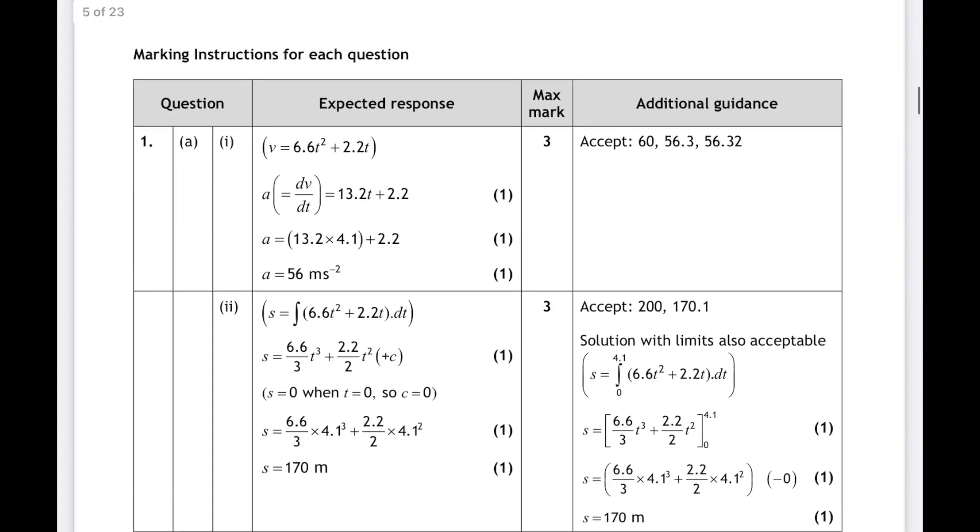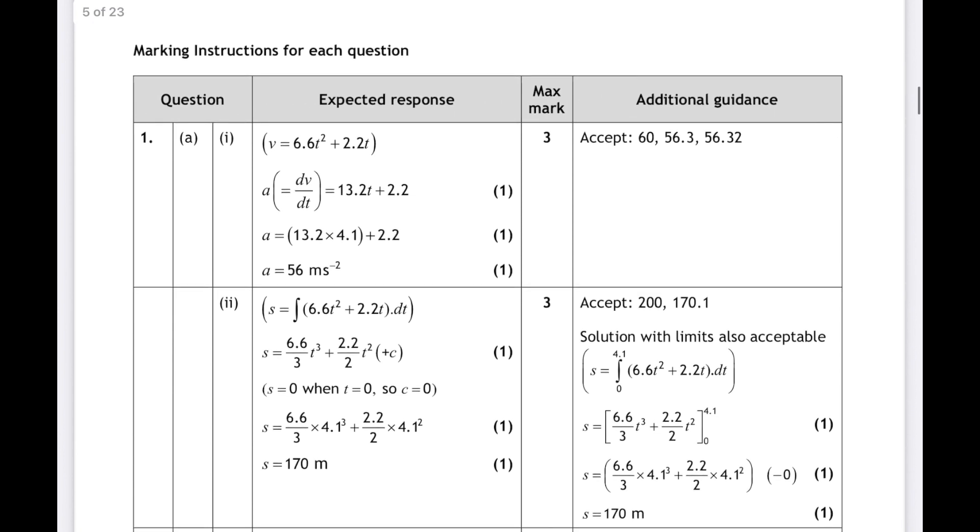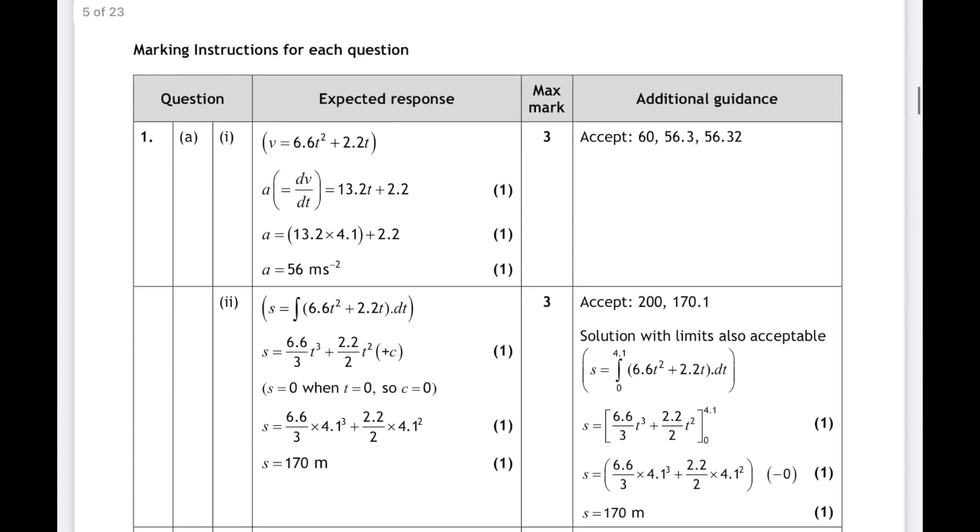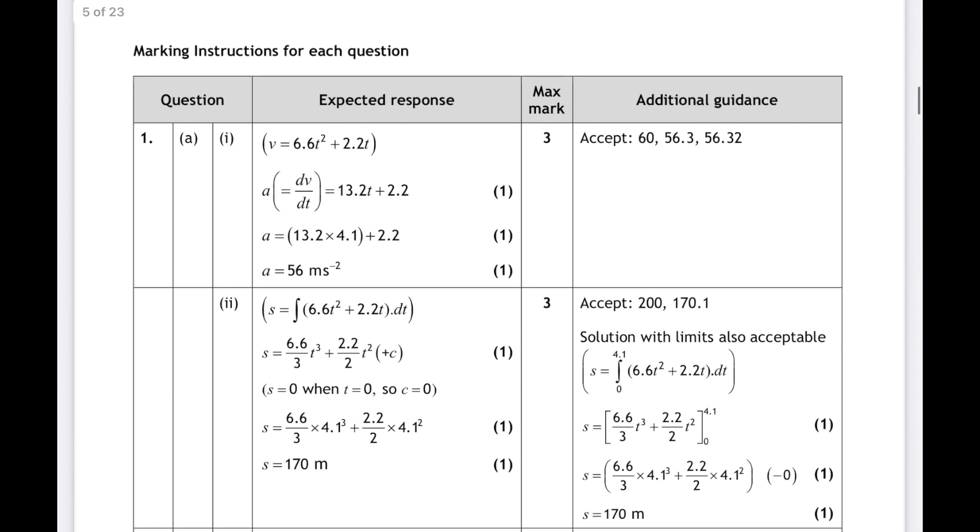Rounded again to two significant figures, because the numbers in the question are two sig figs. Let's have a look at the SQA answers. So it's one mark for integrating, one for substituting, and one for the correct answer with the correct units. Also, notice anything that's bracketed in the SQA marking instructions is not required to get the mark, so the constant of integration is bracketed there. You can still get full marks by showing the integration, substitution, and the correct final answer.